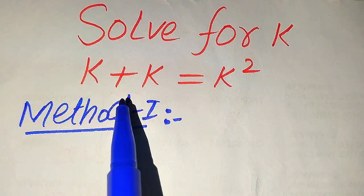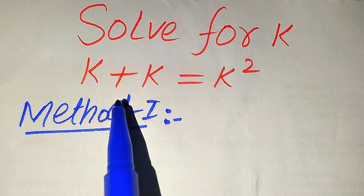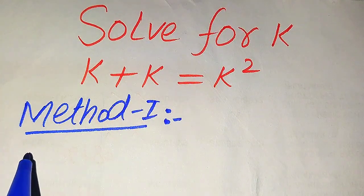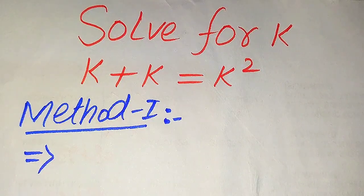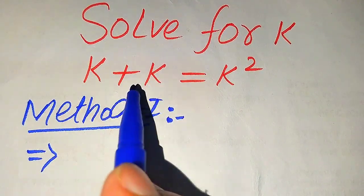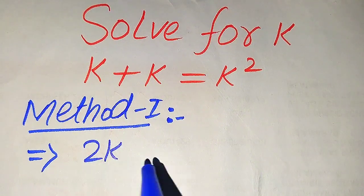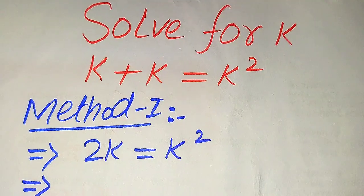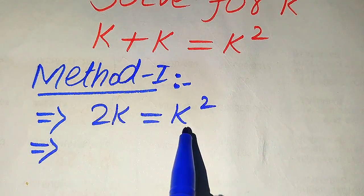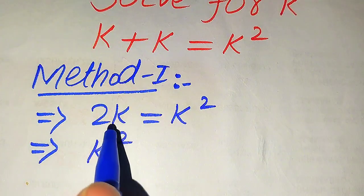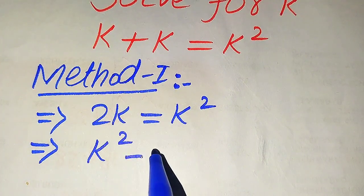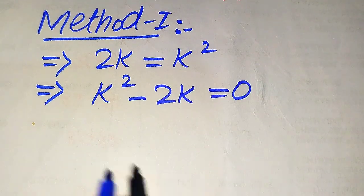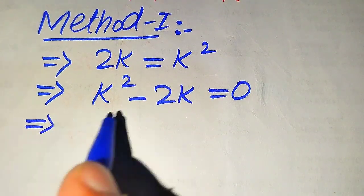In the first method, on the left-hand side we have two variable terms added to each other. To add these, we add their coefficients, which gives us 2K equals K squared. In the next step, we move 2K to the right-hand side, so it becomes K squared minus 2K equals 0.